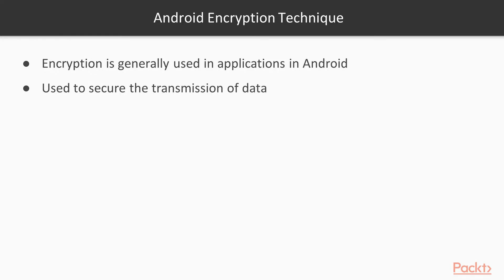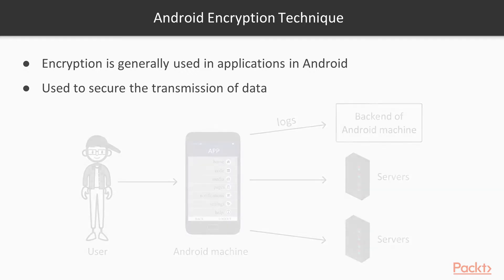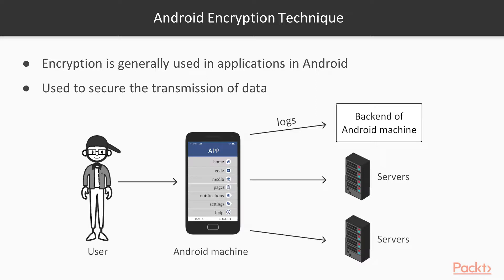Let's talk about basic information about Android encryption. Encryption is generally used in applications. For example, this is an Android machine, this is the user using the Android machine, and this is the back-end database of the Android machine. If you are using any app on this Android machine, it creates logs and can send data to another server. If you are opening any web application or website, it will also go to that web server.